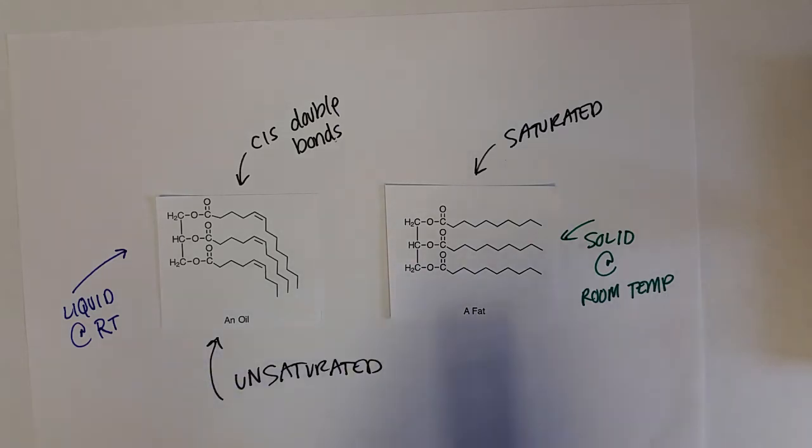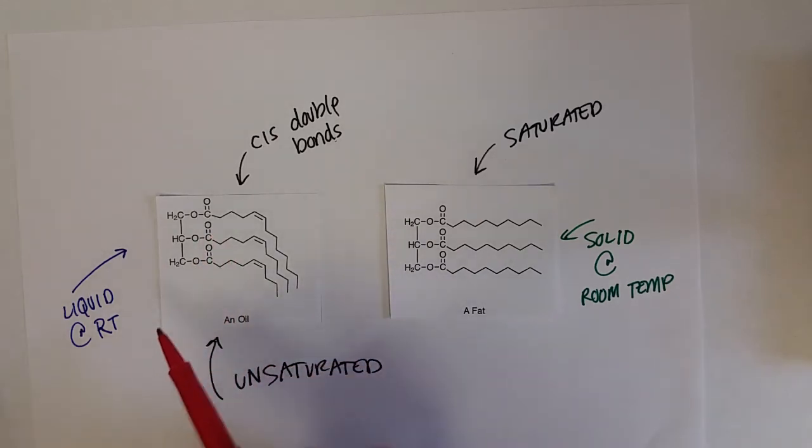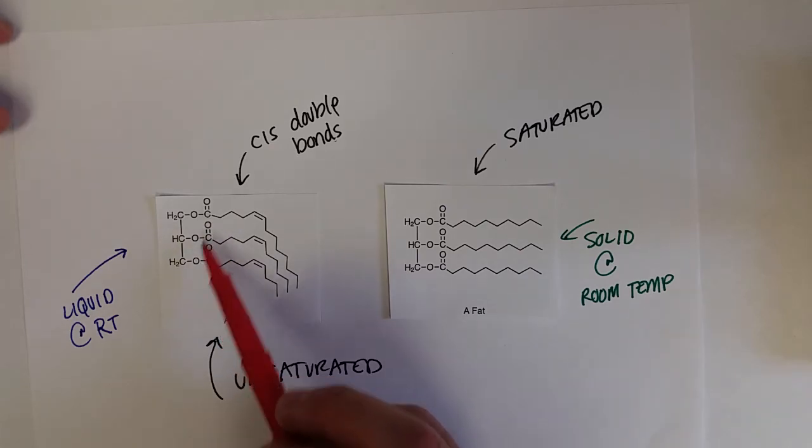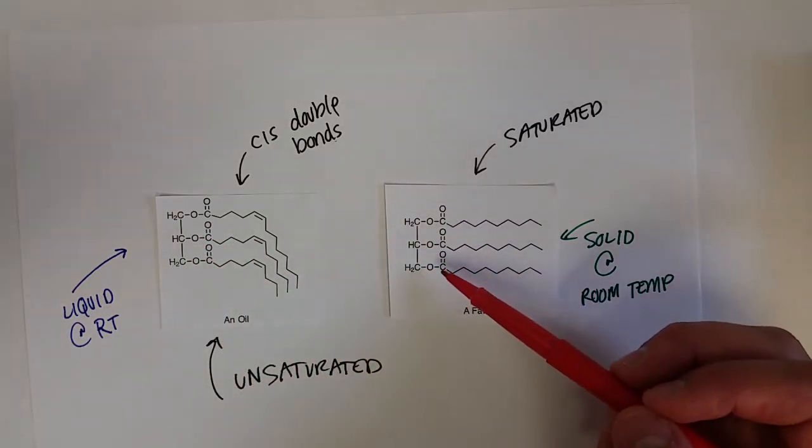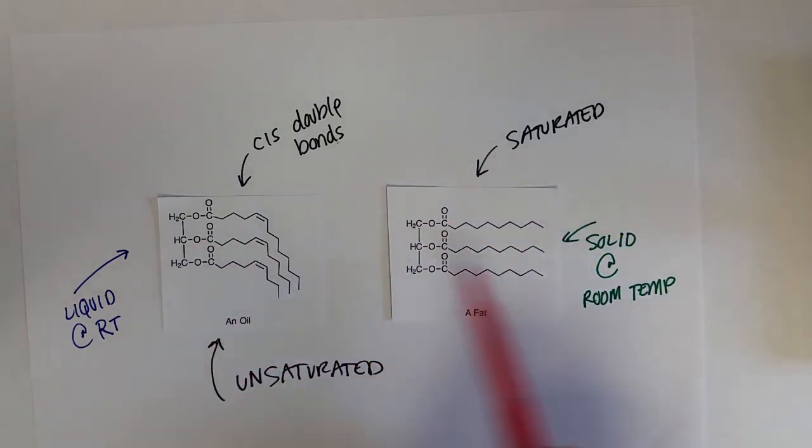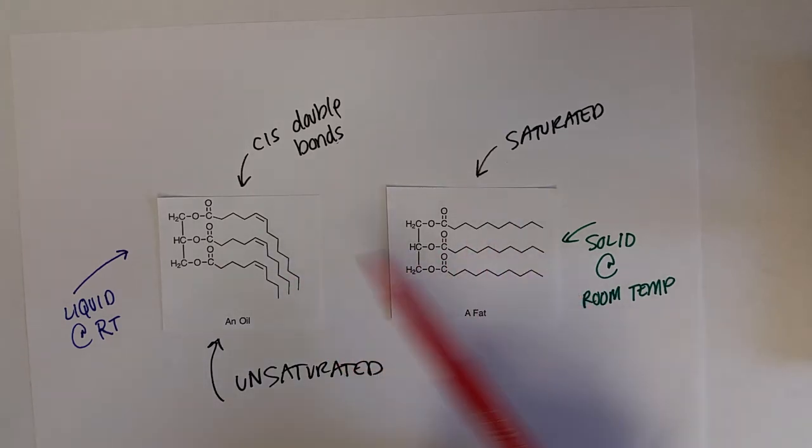Why are they different phases at room temperature? The phases of molecules are largely dictated by the intermolecular forces. They all have dipole-dipole intermolecular forces because of the ester groups - the carbonyl here and the oxygen here. Their long chain of hydrocarbon is nonpolar, so it has dispersion forces. The bigger difference is just essentially the shape.